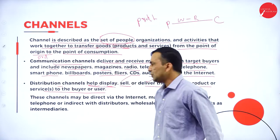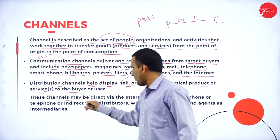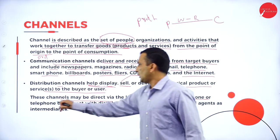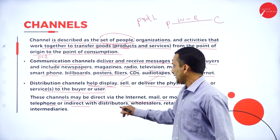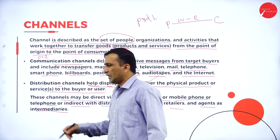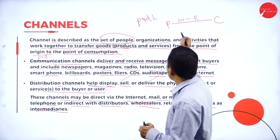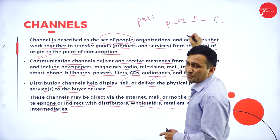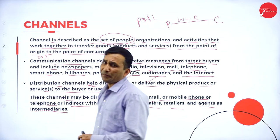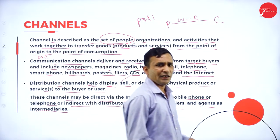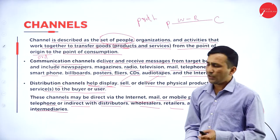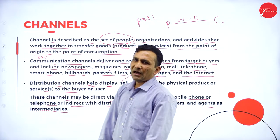This channel may be direct — via internet, mail, mobile phone, telephone — or indirect via distributors, wholesalers, retailers, agents, and other intermediaries who connect the complete transaction and exchange process. We can call them marketing intermediaries. The producer to end consumer — if you want to sell the product, you get support from marketing intermediaries.